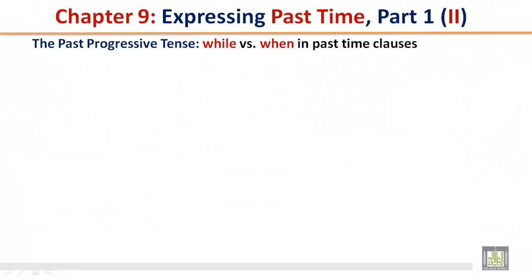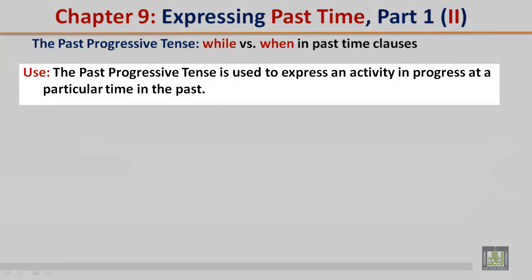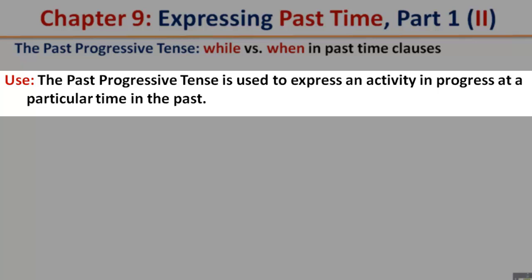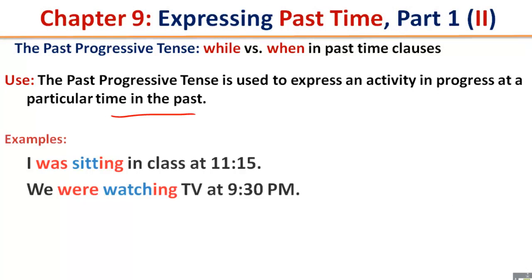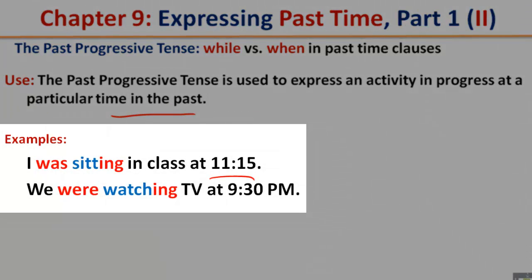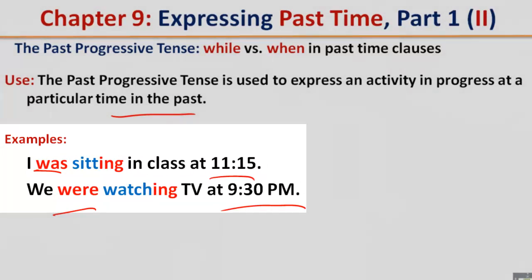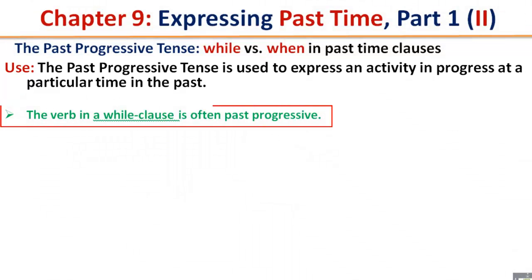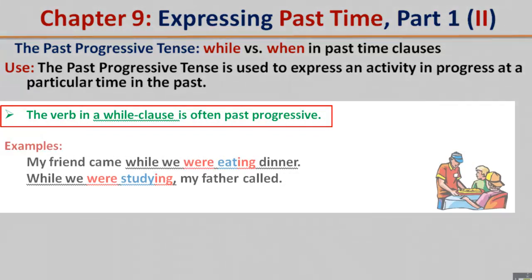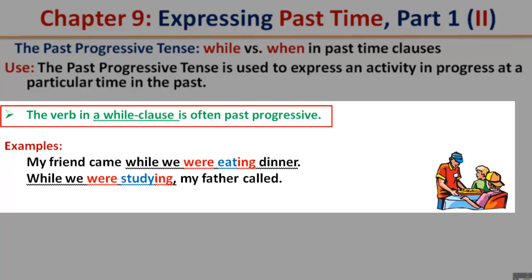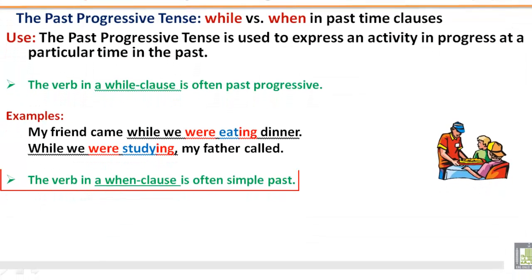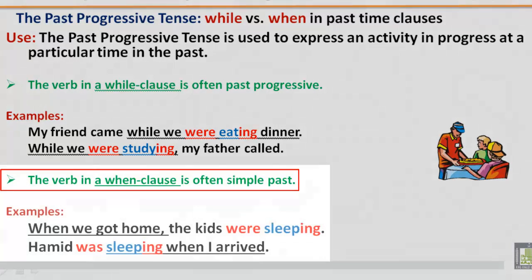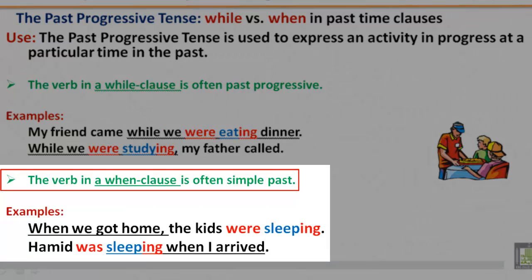The Past Progressive Tense — 'while' versus 'when' in past time clauses. The past progressive tense is used to express an activity in progress at a particular time in the past. The verb in a 'while' clause is often past progressive. My friend came while we were eating dinner. While we were studying, my father called. The verb in a 'when' clause is often simple past. When we got home, the kids were sleeping. Hamid was sleeping when I arrived.